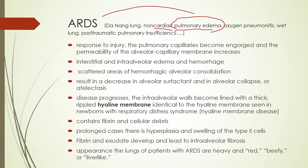ARDS used to be called oxygen pneumonitis, wet lung, and post-traumatic pulmonary insufficiency — it had a lot of different names. Da Nang is from Vietnam, so some military people would recognize that. It was seen during war as well. Understanding that there's a lot of stuff that can lead into it is why it had so many different names at one point.